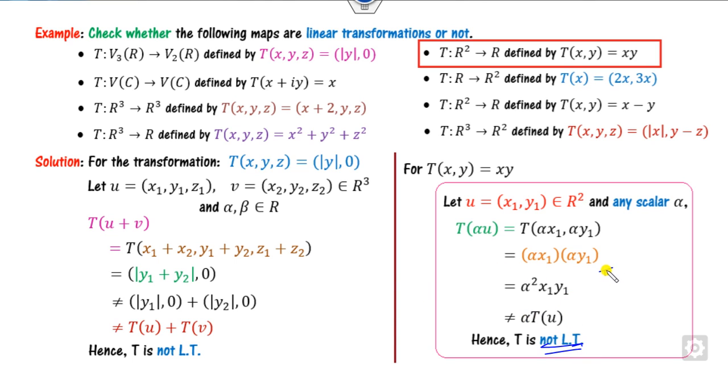For the degree-2 example, starting with alpha U and substituting x and y: the result contains alpha squared times T(U), but we need alpha times T(U). Since alpha² ≠ alpha in general, this is not a linear transformation. You can also verify using T of U plus V.